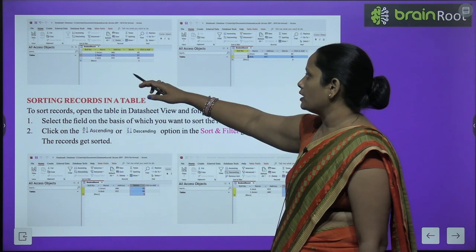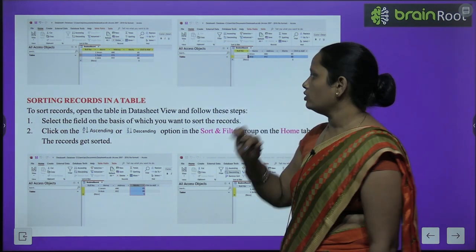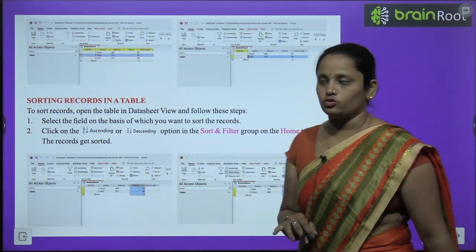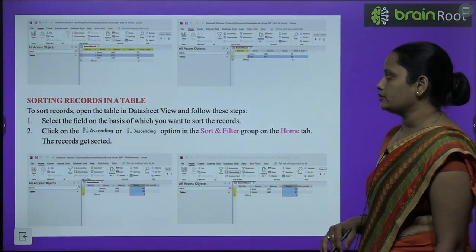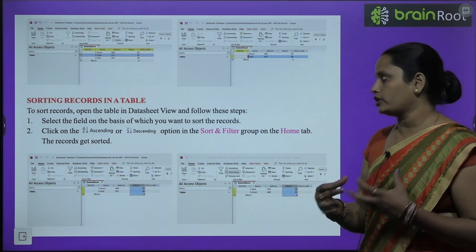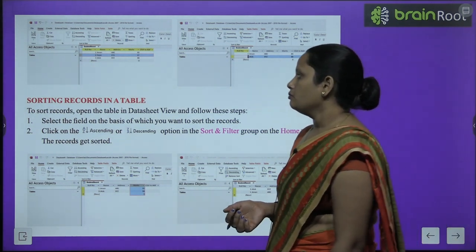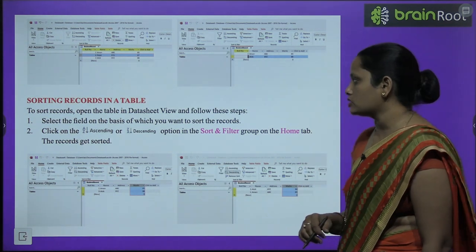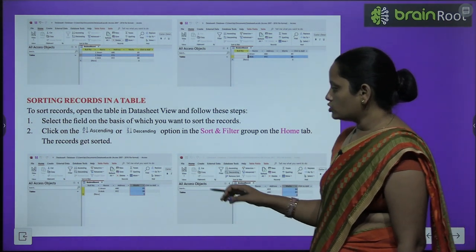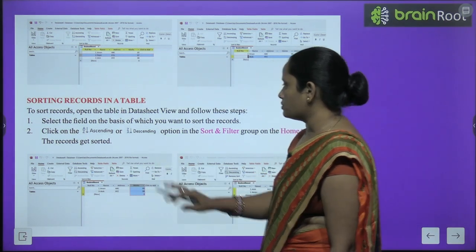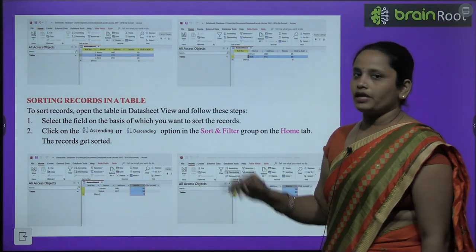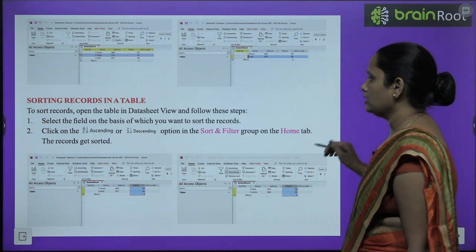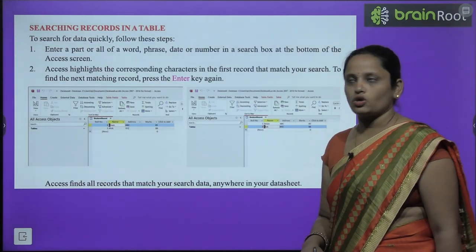You can see that the selected row has been deleted from the table. Next is sorting records. To sort records, first select the field on the basis of which you want to sort, then click the Ascending or Descending option in the Sort and Filter group in the Home tab. Your records will be sorted.